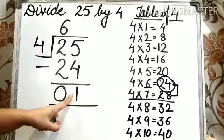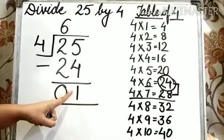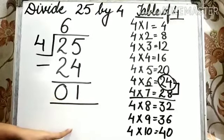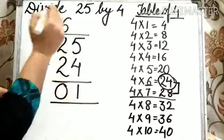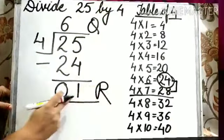So, here 1 is the remainder because we cannot divide 1 further. Here, the quotient is 6 and the remainder is 1.